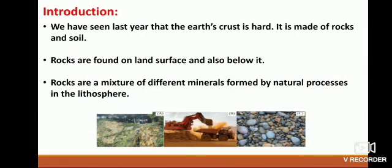We have seen last year that the earth's crust is hard. It is made of rocks and soil. Rocks are found on land surface and also below it. Rocks are a mixture of different minerals formed by natural processes in the lithosphere. The properties of rocks depend on the constituent minerals and their proportion as well as on the formation process. Silica, aluminium, magnesium and iron are the major rock-forming minerals. There are other minerals too in different rocks.